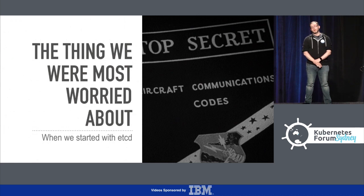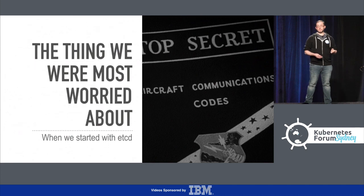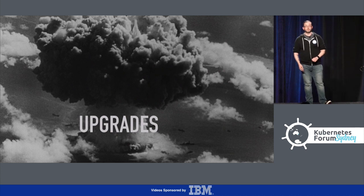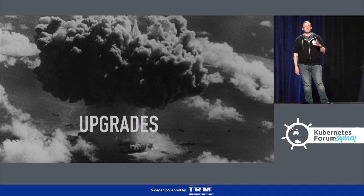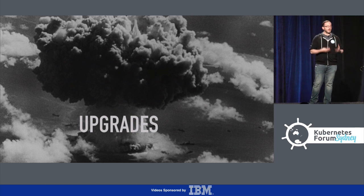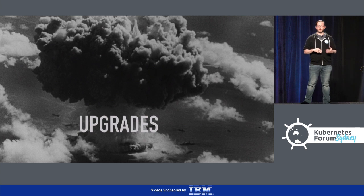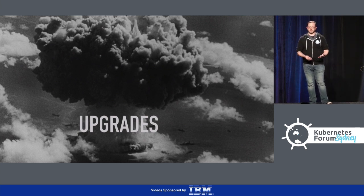When I and the team I was working with first started using etcd, there was one thing that we were most worried about: upgrades going wrong. And so we spent a lot of time and effort thinking about how do etcd upgrades work, what are the failure modes for etcd upgrades, and how can you make this whole thing easier to manage and easier to actually administer?